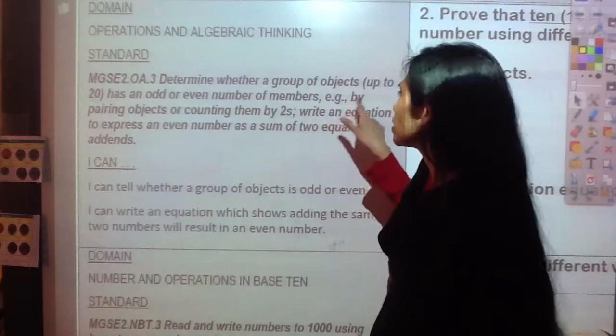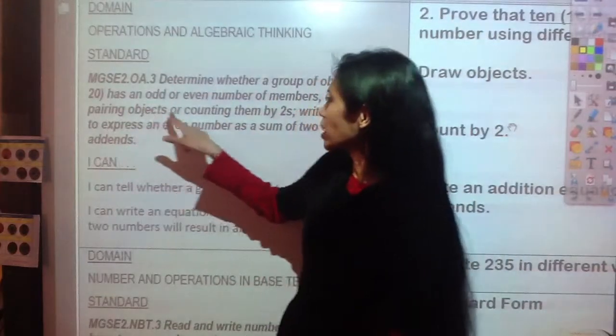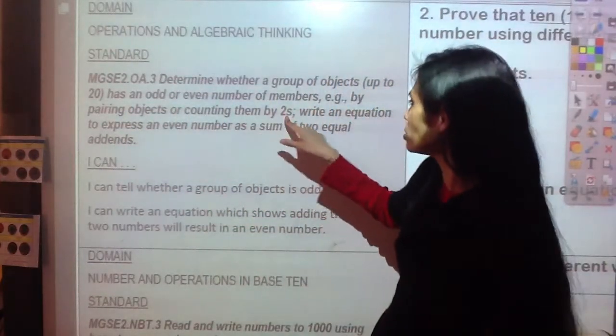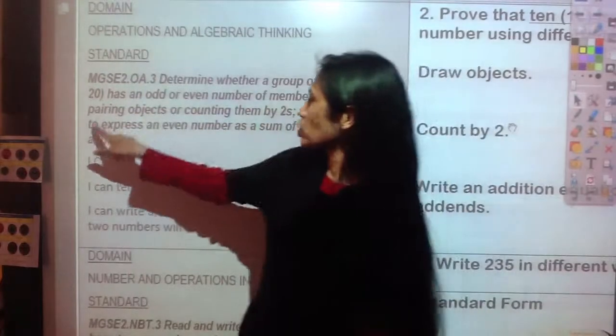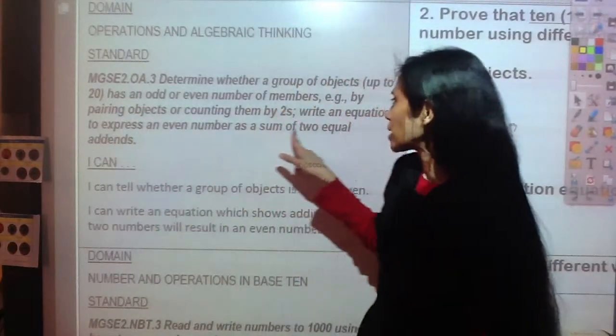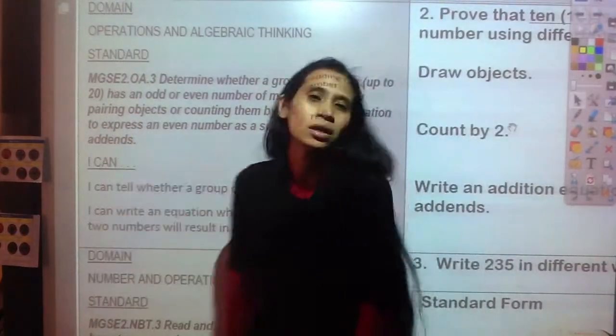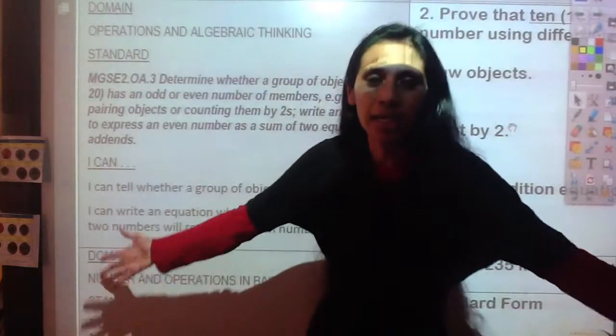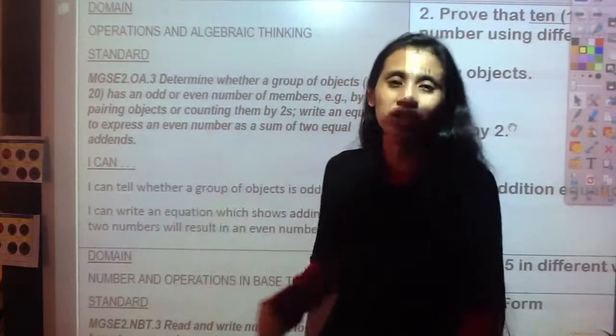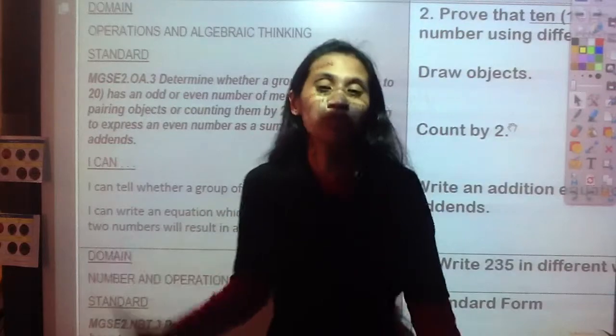Write an equation to express an even number as a sum of two equal addends. What does that mean, Ms. Delana? Now I know you know some of the words in here, but it does sound kind of confusing.